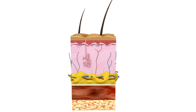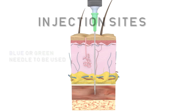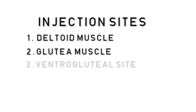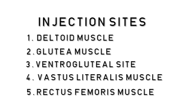The intramuscular route is used when a rapid systematic action is required. The nurse must consider whether a blue or a green needle should be used to access the muscle without hitting the periostal layer of the bone. The intramuscular injection can be given on five sites: the deltoid muscle, the glutea muscle, the ventrogluteal site, the vastus lateralis muscle, and the rectus femoris muscle.